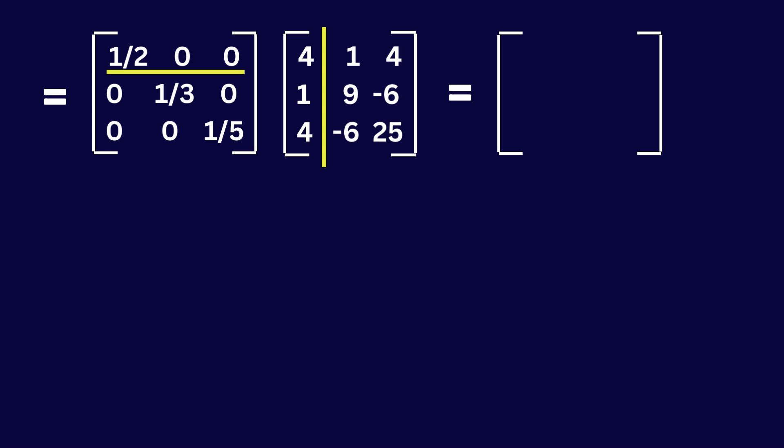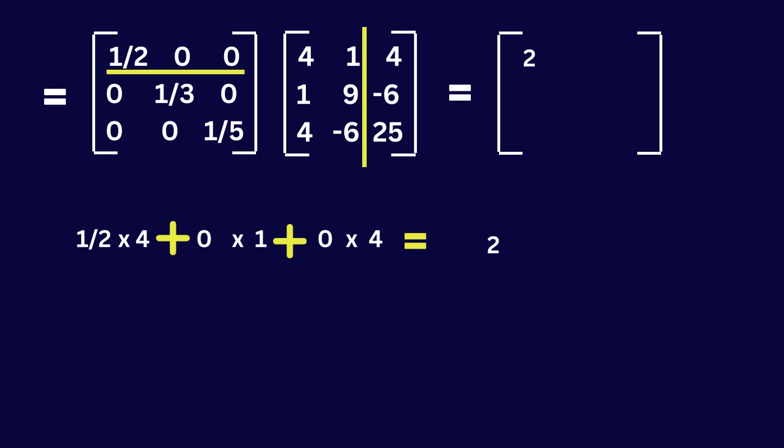Consider the first row of the first matrix and the first column of the second matrix: 1 over 2 multiplied by 4 is 2, 0 multiplied by 1 is 0, and 0 multiplied by 4 is 0. So the overall answer is 2. Let's put 2 in the new matrix.